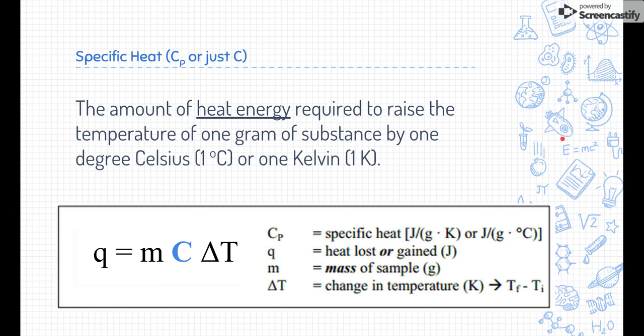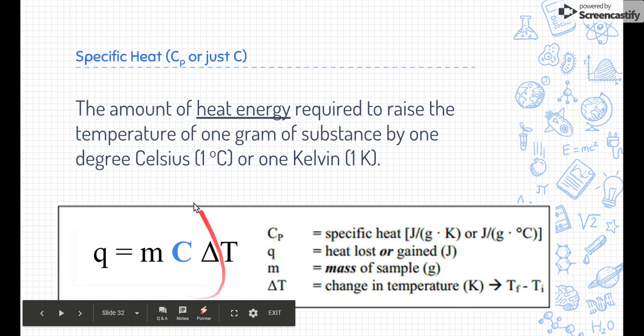Now M is for mass, and that's in grams. And finally, that delta T. Delta is that little triangle symbol. It is a Greek letter delta, and that stands for change in something. So delta T is a change in temperature, where you take the final temperature and you subtract the initial temperature.